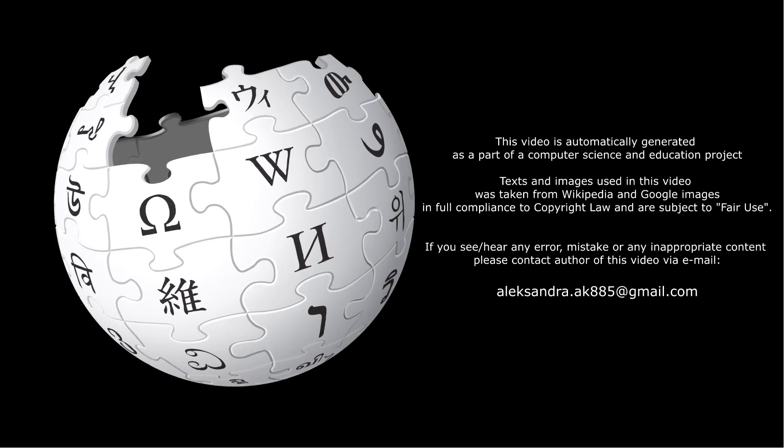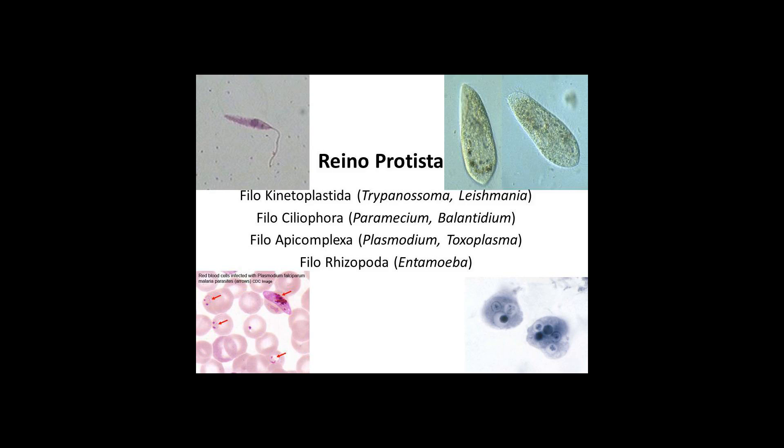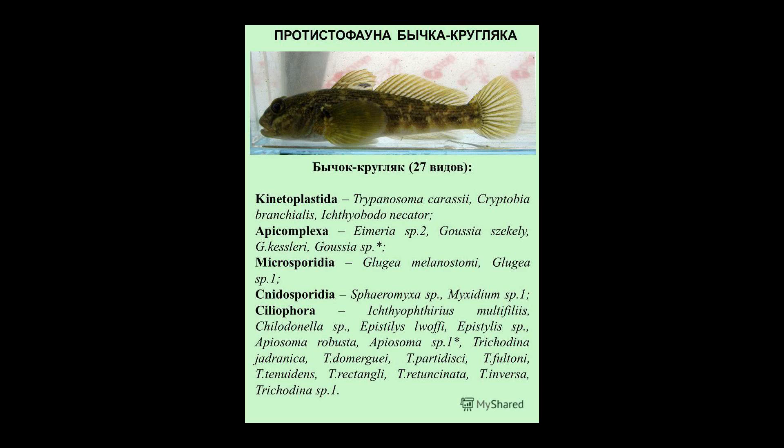Life cycle. Kinetoplastids may be free-living or parasitic. The order Trypanosomatida is notable as it includes many genera which are exclusively parasitic. Trypanosomatids may have simple life cycles in a single host and more complex ones which progress through multiple differentiation stages in two hosts. Dramatic morphological changes are possible between life cycle stages.